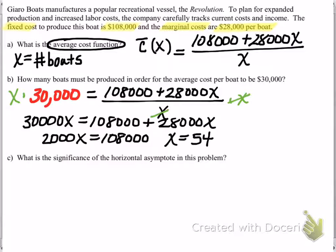So x is equal to 54. But remember, units are important. So this is not $54, but rather this is 54 boats. In other words, if this company produces 54 boats, then the average cost per boat will be $30,000.